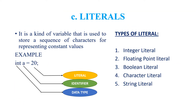The next type under token is literals. What are literals? Literals are nothing but storing constant values. For example, in int A = 20, int is the data type, A is the identifier, and 20 is the literal. There are five types of literals: integer literal, floating point literal, boolean literal, character literal and string literal.